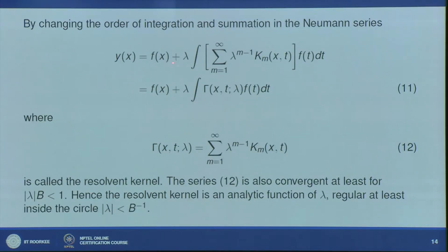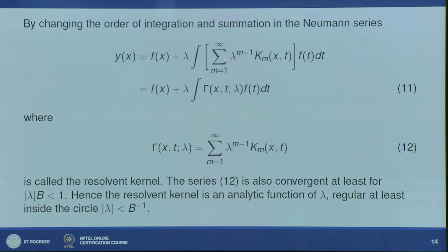Since convergence is uniform, the integral and summation signs are interchangeable. Our solution is given by the Neumann series: y(x) = f(x) + λ ∫γ(x,t,λ) f(t) dt, where the resolvent kernel γ(x,t,λ) is defined by Σ_{m=1}^{∞} λ^{m-1} k_m(x,t). We call γ(x,t,λ) the resolvent kernel.